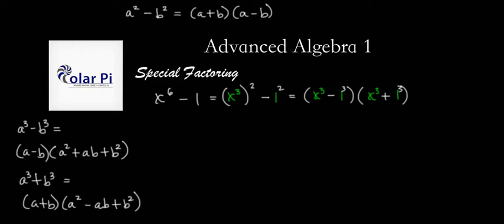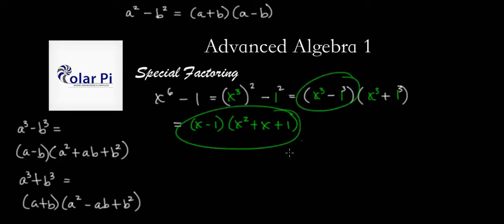So using difference of cubes first, we could replace this guy with the following. This guy, based on this and that, we can write as x minus 1 times x squared plus x plus 1.